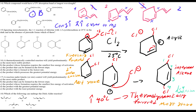Both products 1 and 2 can form, but at 25°C we favor the thermodynamic product — answer A. Answer B (kinetic product) would be about 12% of the product, while A would be about 88%.